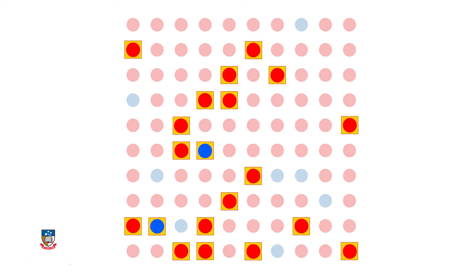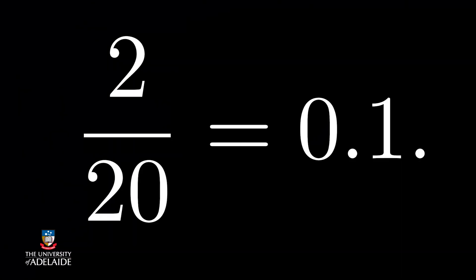So here it is. The marbles in the yellow boxes are my sample marbles. So now you can calculate the sample proportion of blue marbles. You should have got the sample proportion of two blue marbles in a total of 20 marbles, giving 10%. So the sample proportion matches the population proportion.